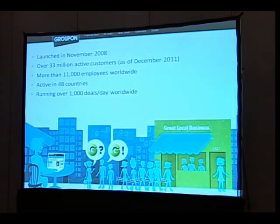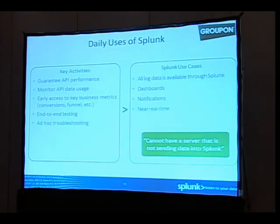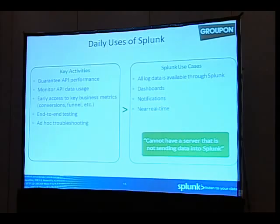Everyone here should also know about Groupon, one of the leading providers of daily deals. Groupon uses Splunk to guarantee API performance, monitor API usage, and provide analytics for key business metrics. For example, they look at conversion rates and funnel analysis on their daily deals in real time as data flows into the system. This allows them to react quickly when something goes wrong in a daily deal push. Their operations staff build Splunk dashboards, and our guarantee is that data will be searchable within seconds of being written to disk.